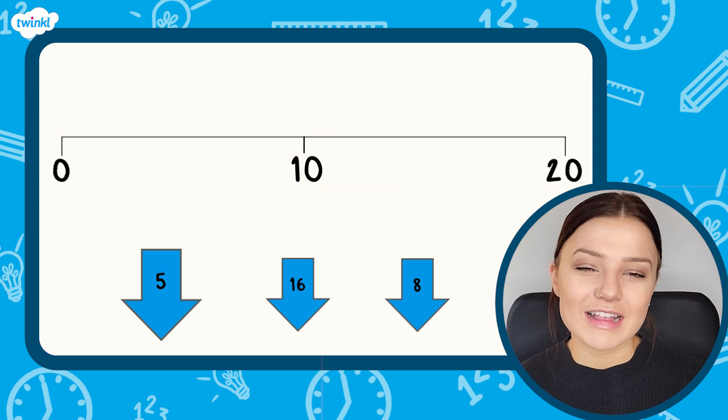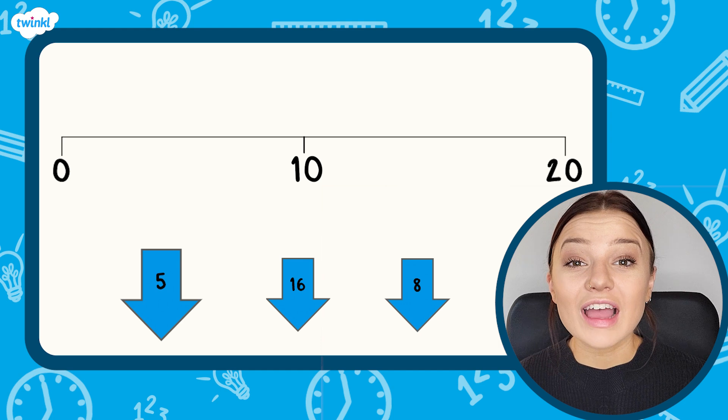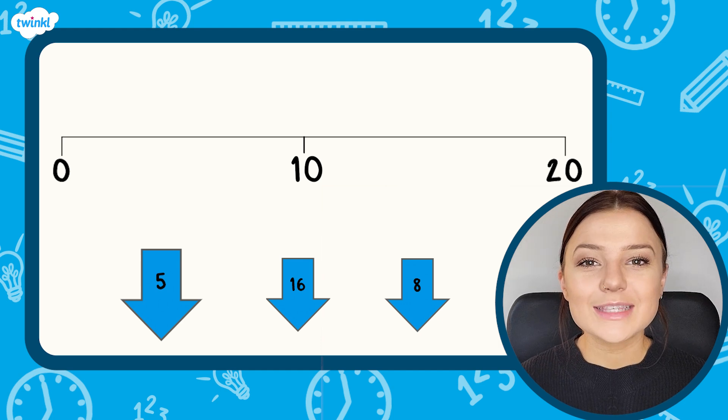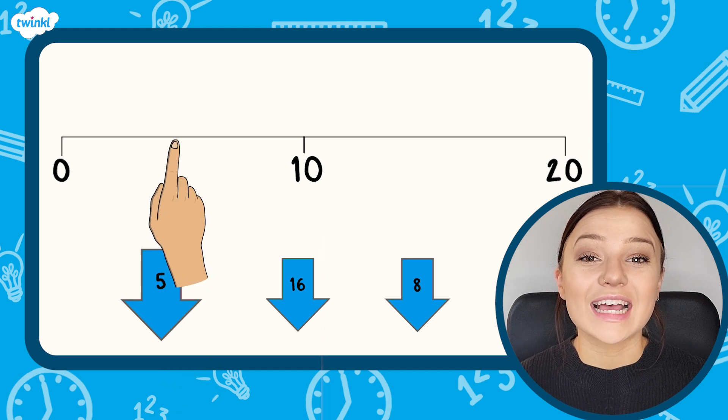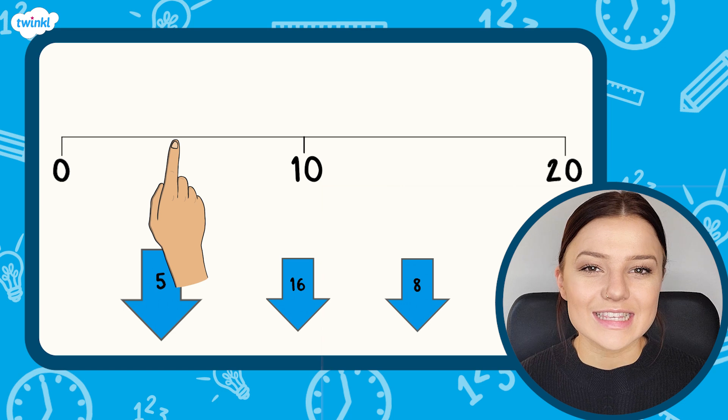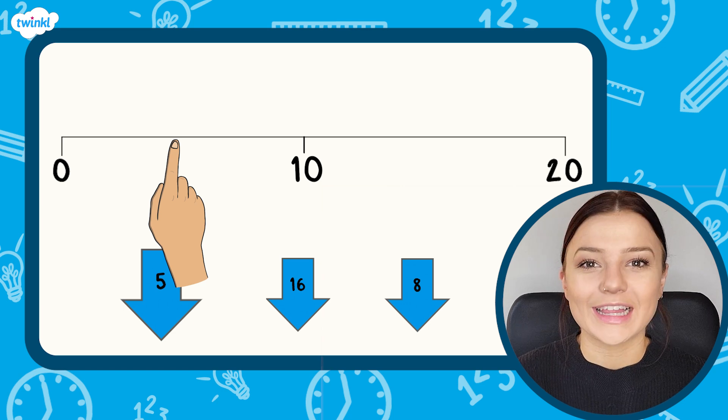The difference between 0 and 10 is 10 and 5 is half of 10. This means that the arrow will point exactly halfway between 10 and 0 which is approximately here.